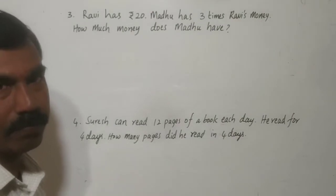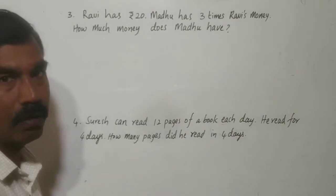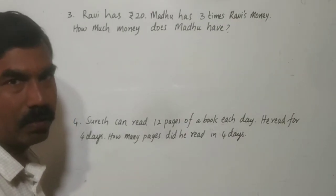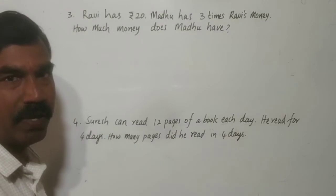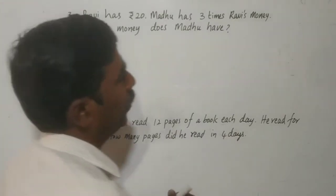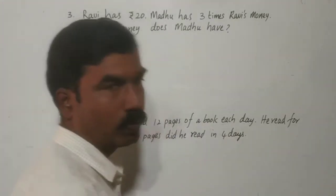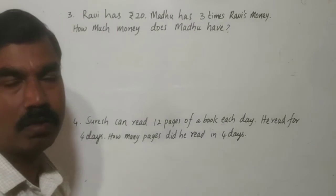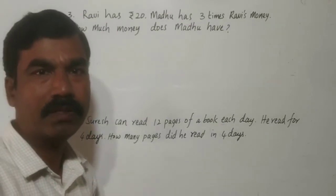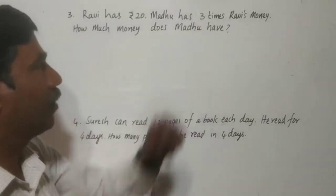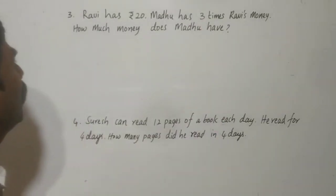You see, 2 times or twice — twice means you have to multiply with 2. 3 times means you have to multiply with 3. Here, 3 times.